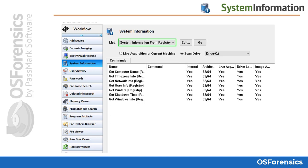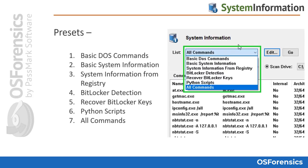Let's look at the available default list of scans. There is the basic DOS commands option, the basic system information option, the system information from registry option, a BitLocker detection and the recover BitLocker keys option, Python scripts, and then there's an all commands option as well.